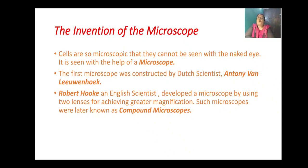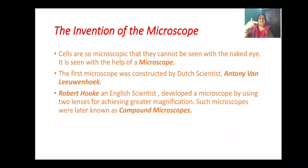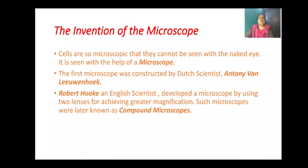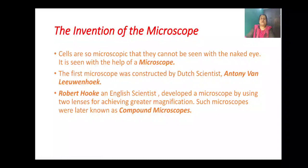Cells are so microscopic that they cannot be seen with the naked eye, so they are always viewed with the help of a microscope. The first microscope was constructed by the Dutch scientist — keep in mind these terms, as they are commonly asked as objective questions: who discovered the cell first, and how was the microscope invented? Robert Hooke developed a microscope using two lenses for greater magnification, and these microscopes were later known as compound microscopes.